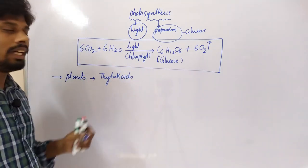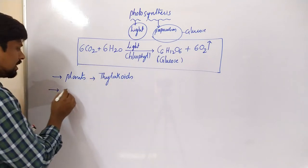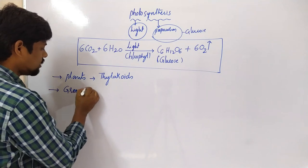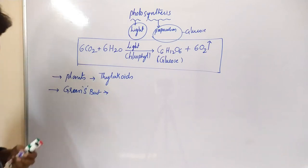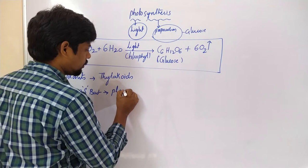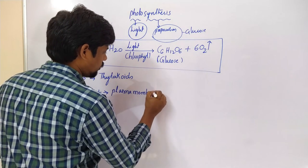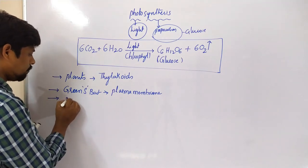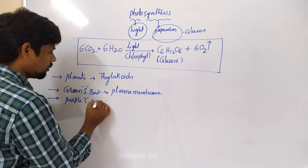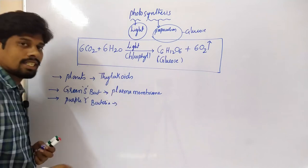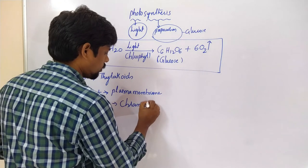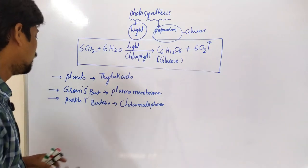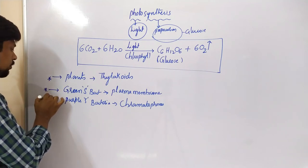In the previous class, I already told where thylakoids are present. Whereas, in some prokaryotes like green purple bacteria and green sulfur bacteria, photosynthesis can occur in the plasma membrane. Coming to another bacteria, that is purple sulfur bacteria — photosynthesis can occur in the chromatophores. Chromatophores are the invaginations of the plasma membrane. This is very important for the comparison of photosynthesis location.